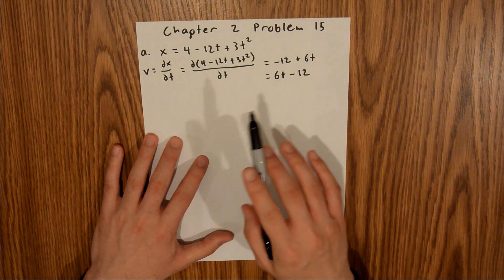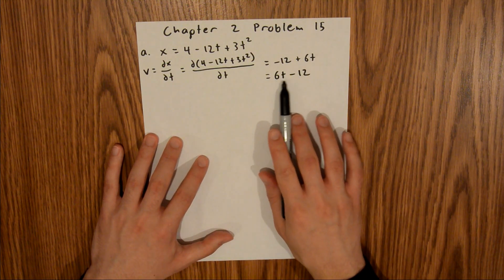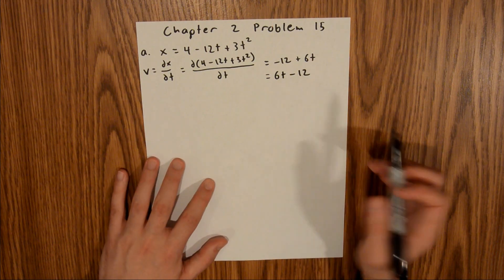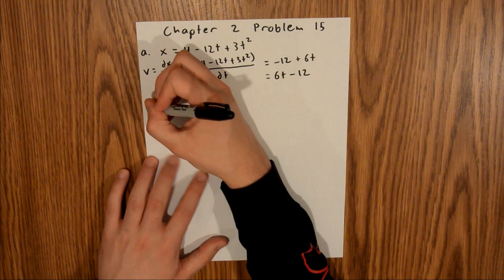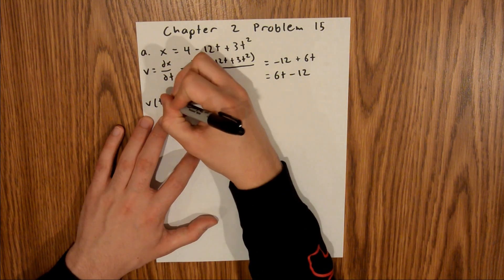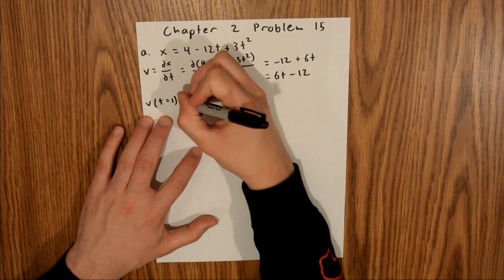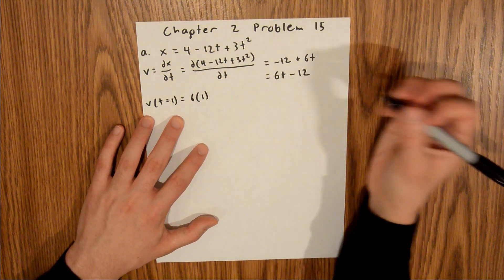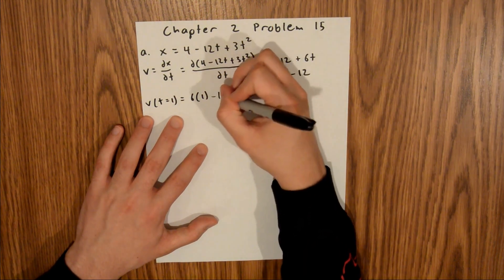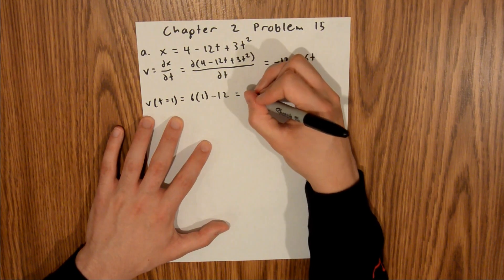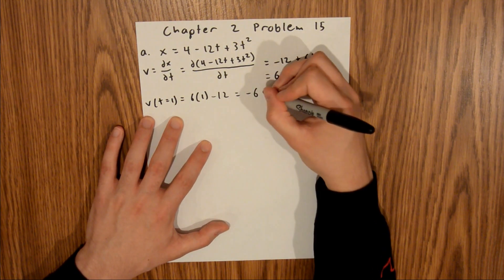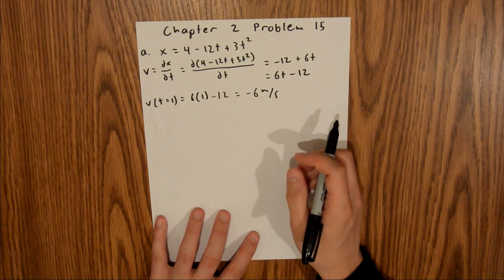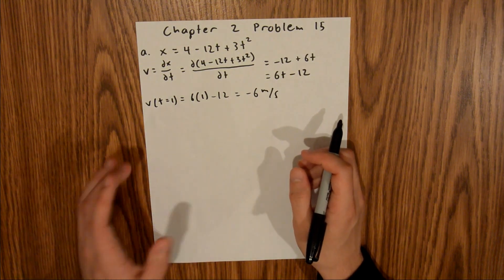The velocity at t equals 1 is this equation with t plugged in as 1, so v at t equals 1 is equal to 6 times 1 minus 12, and that's going to be equal to negative 6 meters per second. That's your final answer for part A.